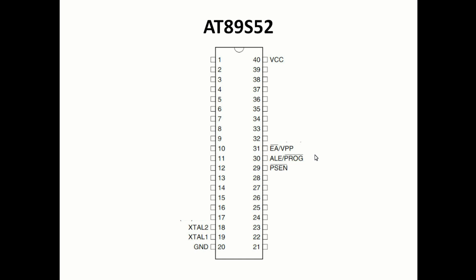If you are using the internal memory available in this microcontroller — which is 8 KB of ROM — you need to connect a 5-volt signal to this pin. Since I am going to use internal memory and not external memory, I am connecting 5 volts directly to pin 31 (EA). Pin 30, Address Latch Enable (ALE), is used for fetching the lower byte of external memory, and since we are not using external memory, we will leave this pin floating.